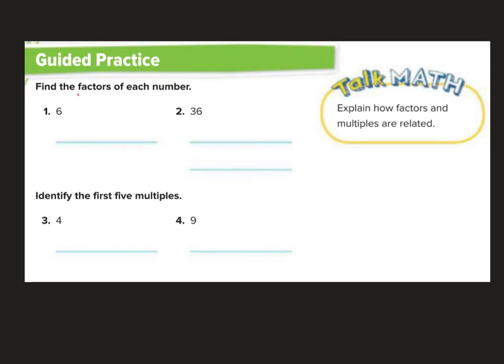Find the factors of each number. So what numbers multiply together to make 6? I can do 1 times 6, 2 times 3. Does 4 go? No. So when I list my factors from least to greatest I would do 1, 2, 3, and 6.